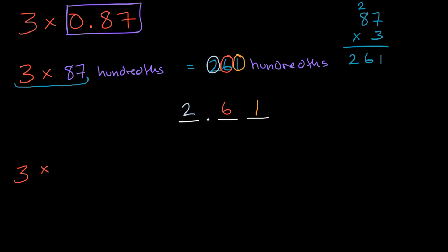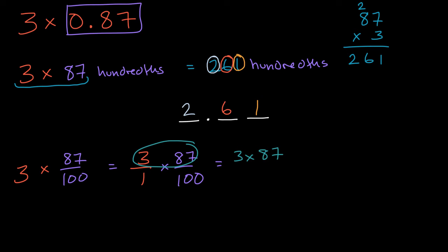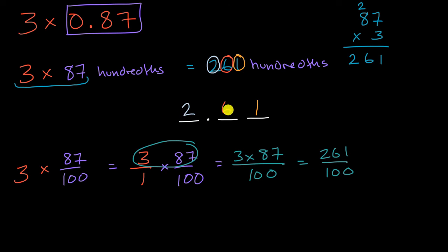Another equivalent approach: three wholes times 87-hundredths equals 261 over 100, which is 261-hundredths. Since 100 goes into 261 two times with 61 remaining, we get 2.61. These are all equivalent representations.